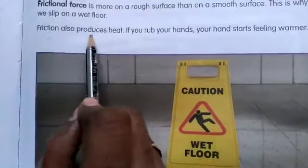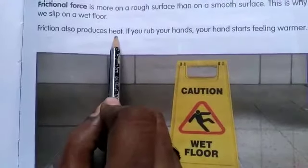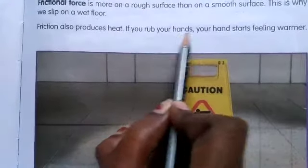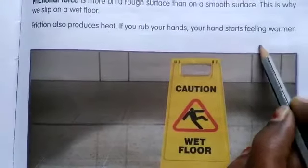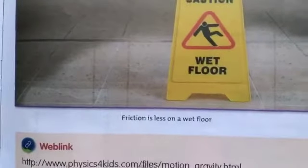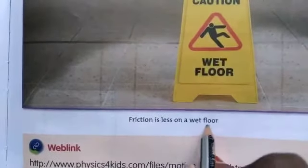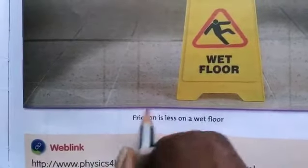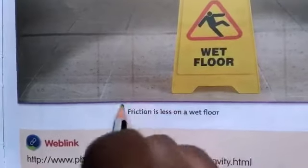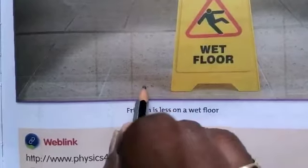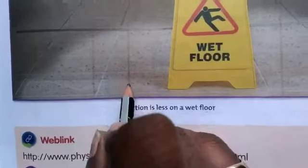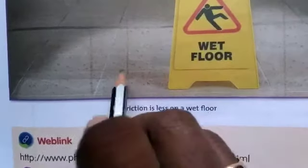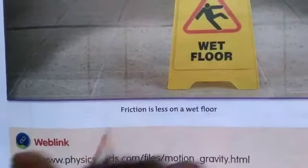Friction also produces heat — if you rub your hands, your hands start feeling warmer. Friction is less on a wet floor. The force of your body is more and the friction is less on the wet floor, so you will slip on the wet floor.